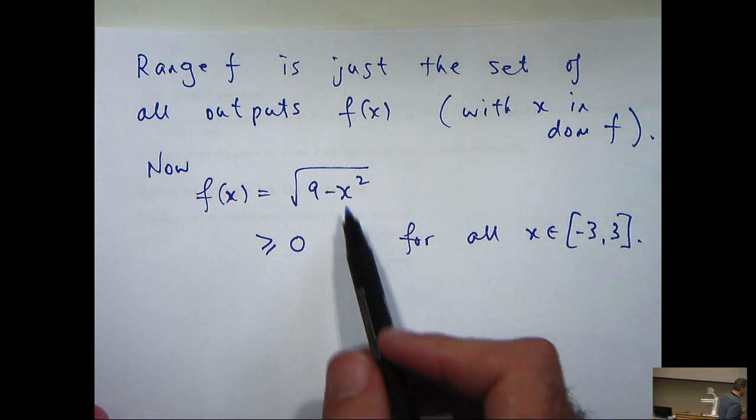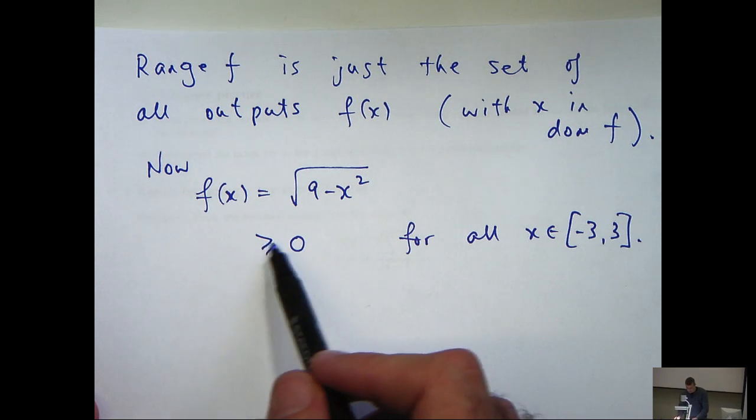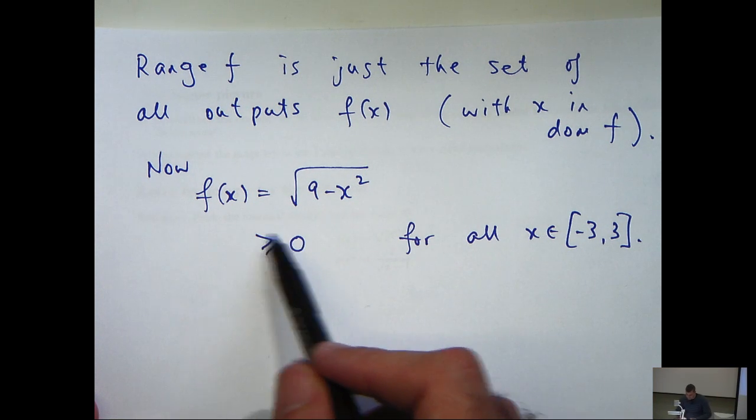Okay, and in particular, if x equals positive or negative 3, f of x equals 0. So we do have greater than or equals to. It's not just greater than here.